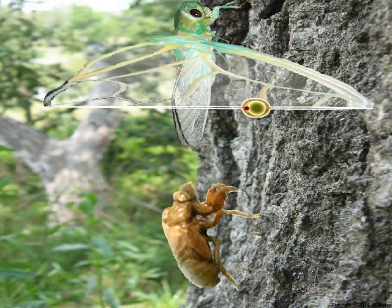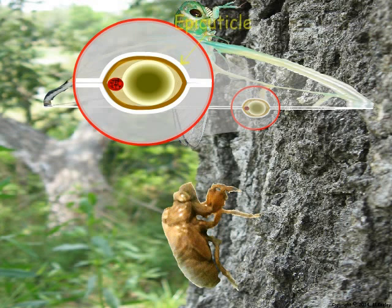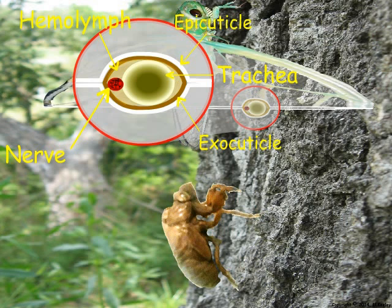Here is a cross-sectional view of the wing showing the presence of veins. Veins form around trachea as thickened regions comprised of epicuticle and sclerotized exocuticle. The veins provide structural support for the membranous areas and contain trachea and nerves. The veins also allow hemolymph flow through the wing to keep the wing from becoming overly dry and brittle. Next, we will examine the structures of the thorax segments involved in flight and their relationships with the flight muscles.